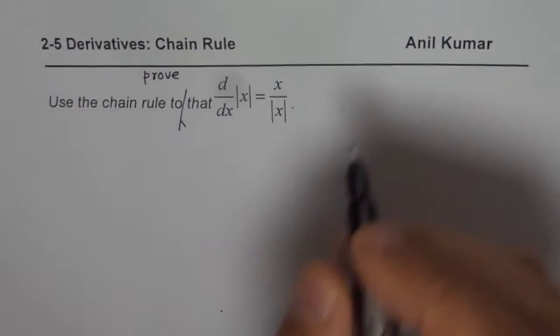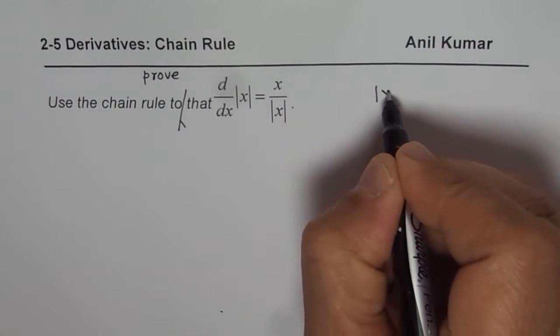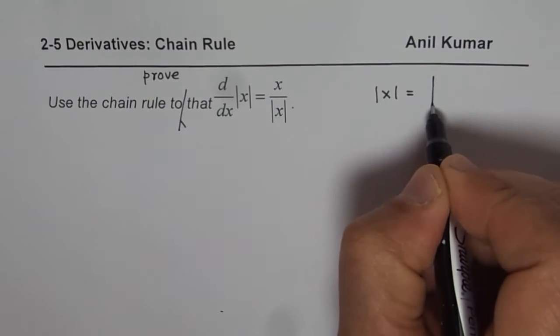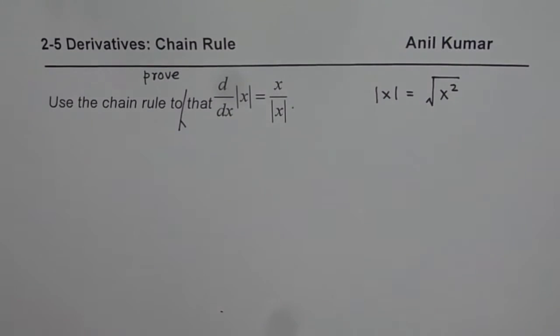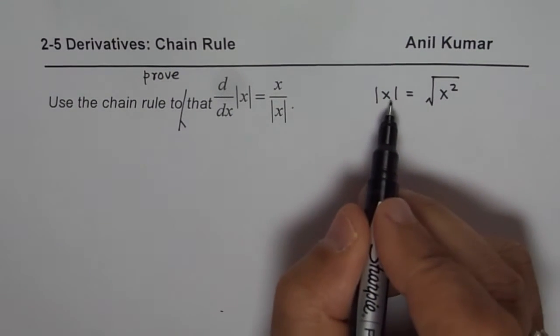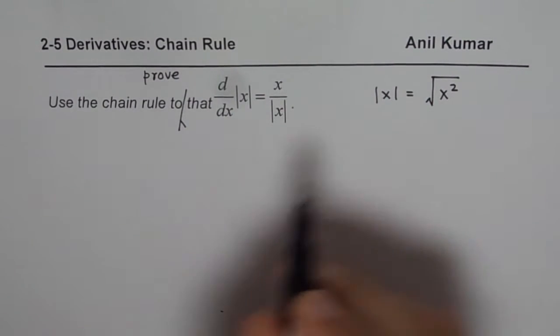Well, to begin with, what is absolute x? Absolute x is actually square root of x square. So that is what absolute x is. So let us begin finding derivative of this absolute x function.